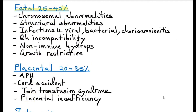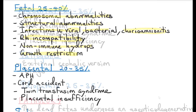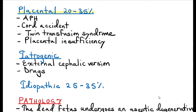Fetal causes account for about 25 to 40 percent of all the causes and include chromosomal abnormalities, structural abnormalities like anencephaly and Down syndrome, infections like viral, bacterial, or chorioamnionitis, Rhesus incompatibility, non-immune hydrops fetalis — remember in hydrops fetalis there is excessive fetal accumulation of fluid — and intrauterine growth restriction.